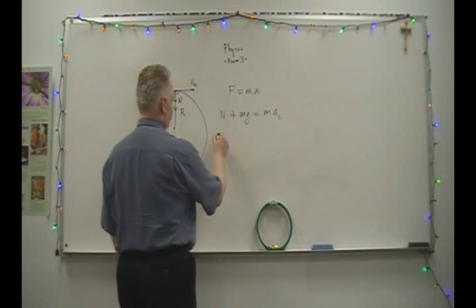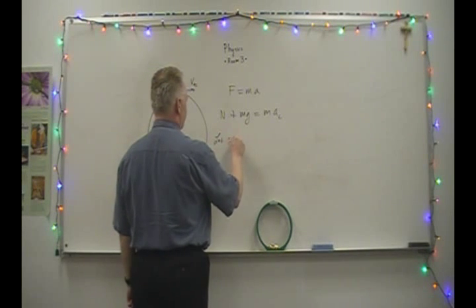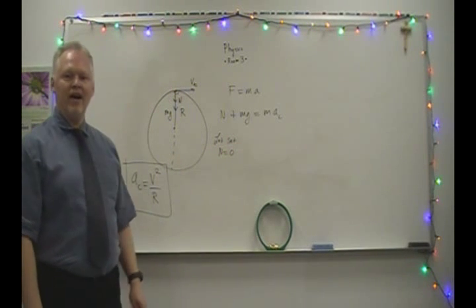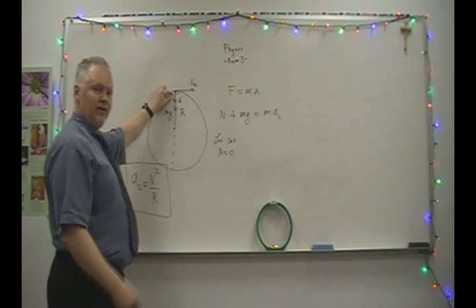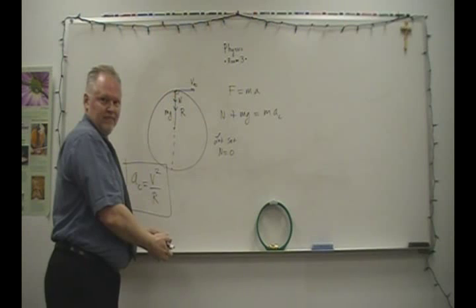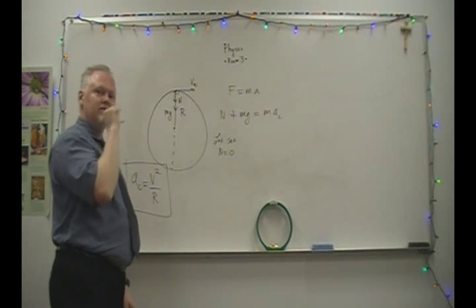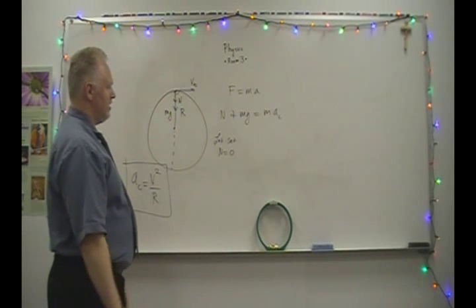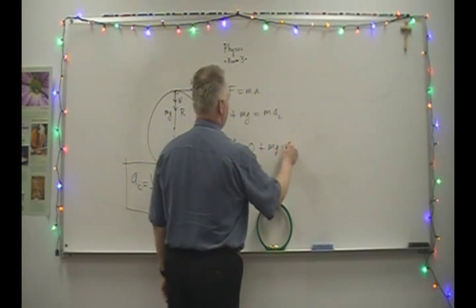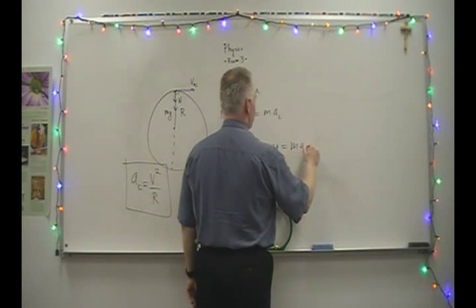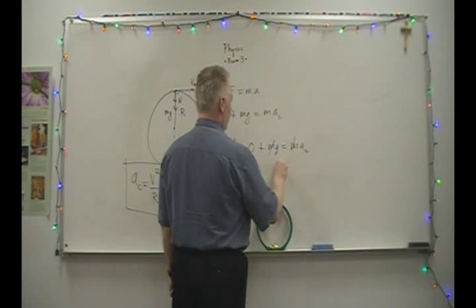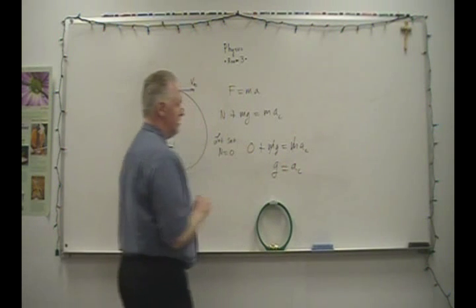This is the net unbalanced force that produces the centripetal acceleration. Let's set N equal to zero — this is the limiting case, when the car would be momentarily weightless. If N equals zero, this becomes mg equals ma_c. Notice what happens: the m's cancel out, and we have g equals a_c in this limiting case.